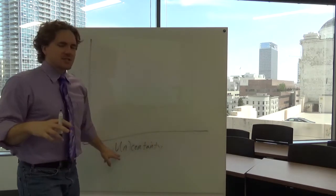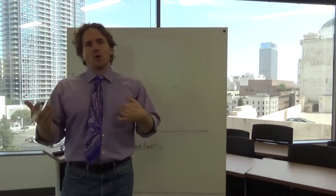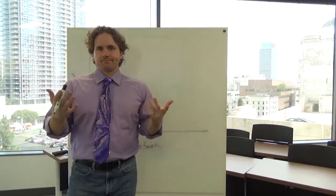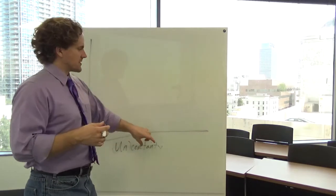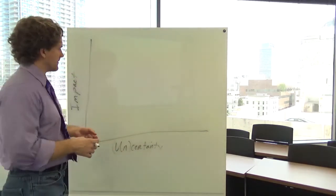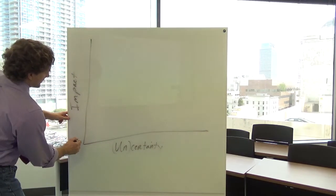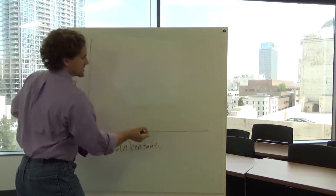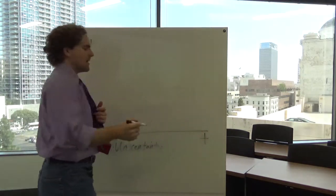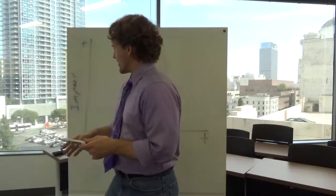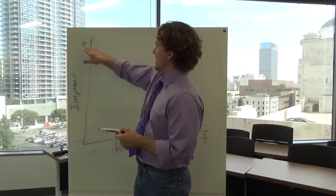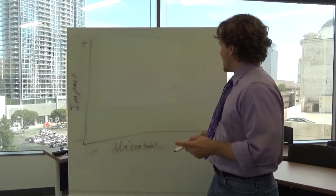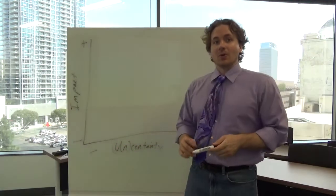I put 'un' in parentheses because you can do certainty or uncertainty. If you do certainty or uncertainty you just flip the axis. Then I like to put a minus here and a plus here for my scale. What I'm trying to show is this is low impact, high impact, low uncertainty or high certainty, high uncertainty or low certainty.